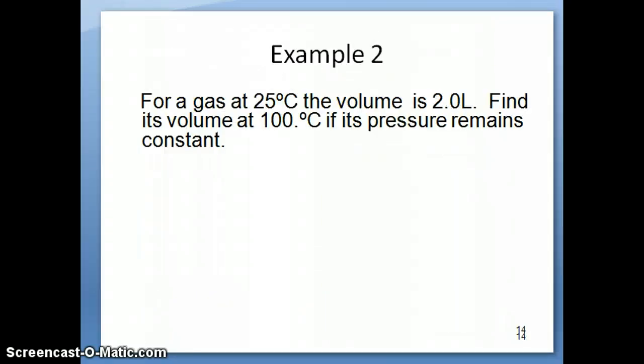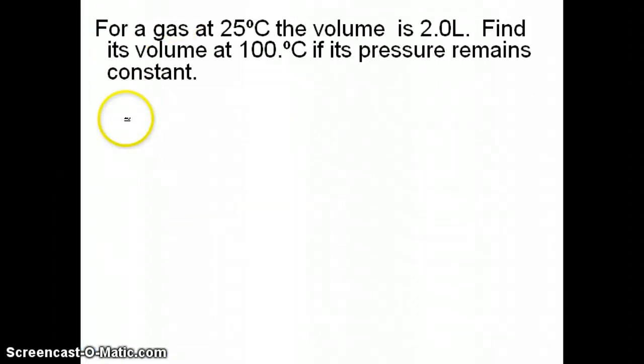I want to close off this video by working through this example. This is an example where it says you have a gas at 25 degrees Celsius, the volume is 2 liters. What is the volume of the gas when you increase the temperature to 100 degrees Celsius if pressure remains constant? The way you want to do a lot of gas problems, you're going to start with all the variables that you know because usually you have to plug it into one of these gas laws. So the volume initially is 2 liters, so you can indicate that as your first volume, V1, 2 liters right here. The temperature 1 is in this case 25 degrees Celsius. Temperature 2 is given as 100 degrees Celsius. And then volume 2 is what we're being asked.